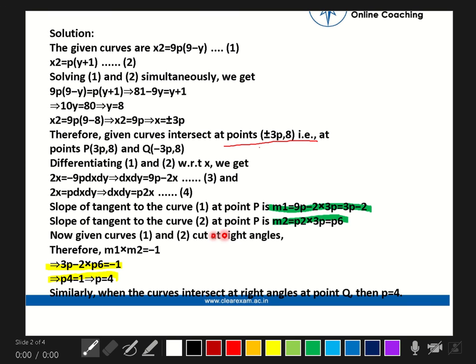Now, given curves 1 and 2 cut at right angles. This is the condition given to us. Therefore, m₁ × m₂ = -1.